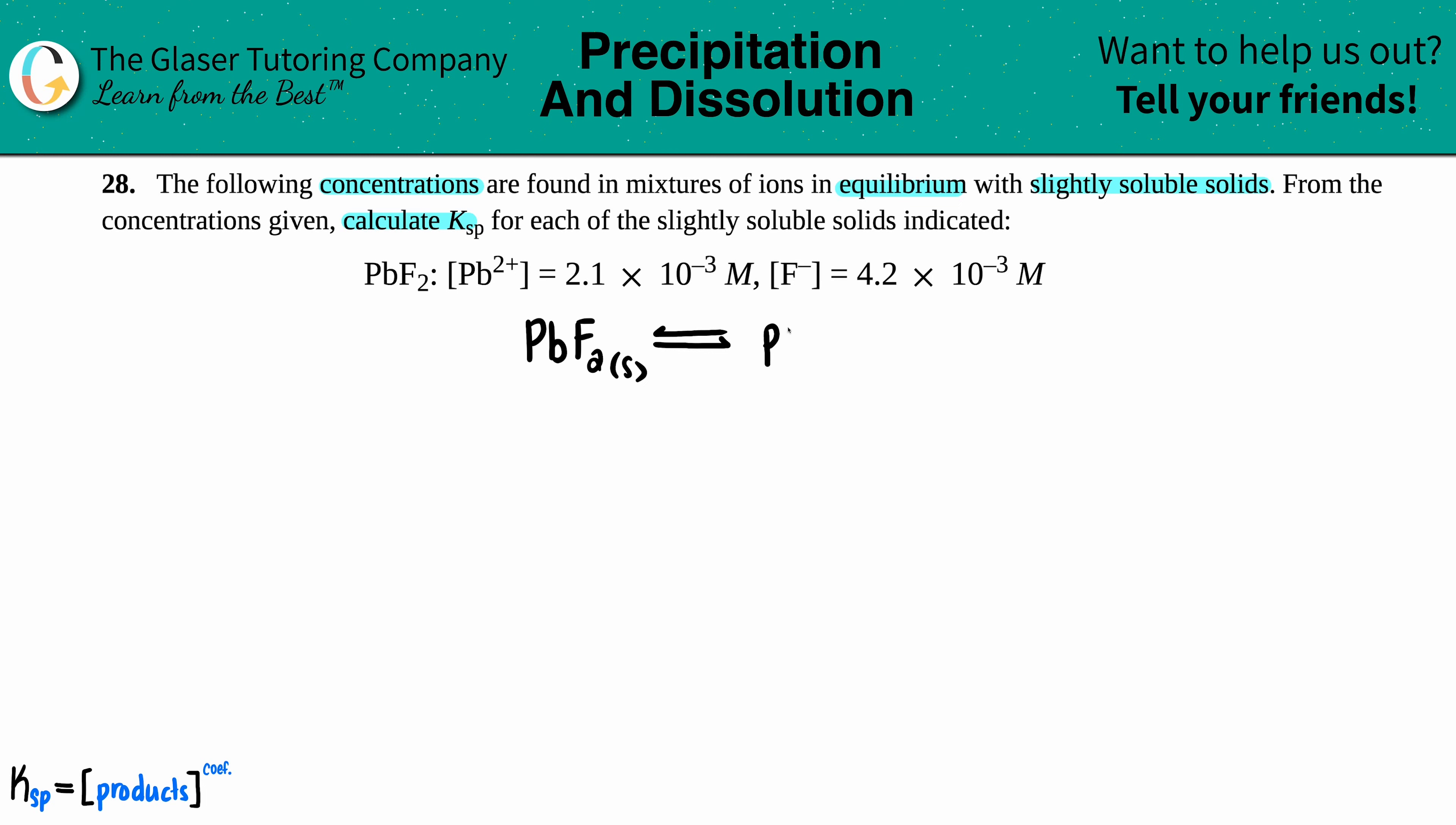We have PbF2 that's going to start off as a solid. This comes to equilibrium, because we're dealing with a K value, into Pb2+ and then the F-. Since they're ions, they're aqueous. And I'm just looking at the equation right now—we have to balance it. There's two fluorines, so I just have to put a two in front of that, and now it looks like we're balanced.